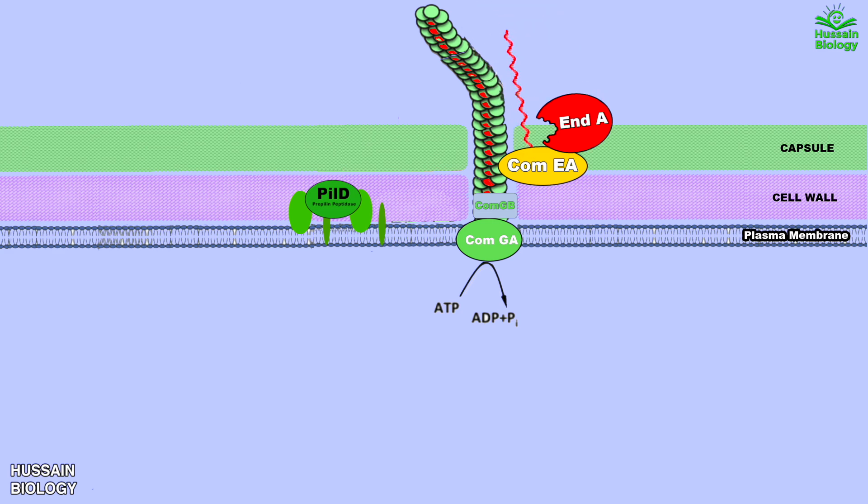After that, the ComFA protein translocates the ssDNA via ComEC into the host cell as shown in the animation. Now we have ssDNA into the cell. In order to protect it, the bacteria uses SSB proteins which protect ssDNA from degrading.